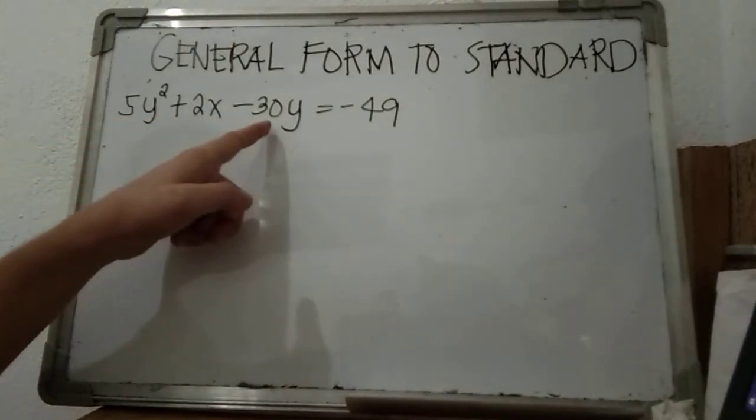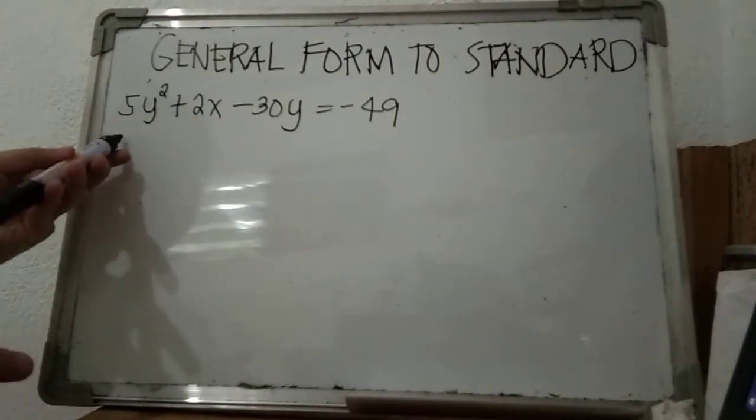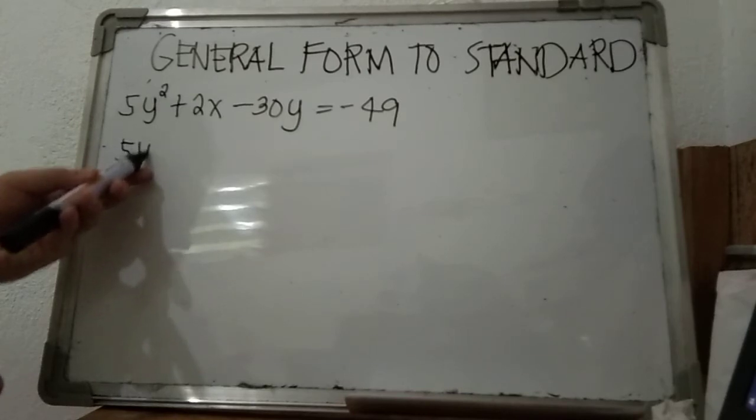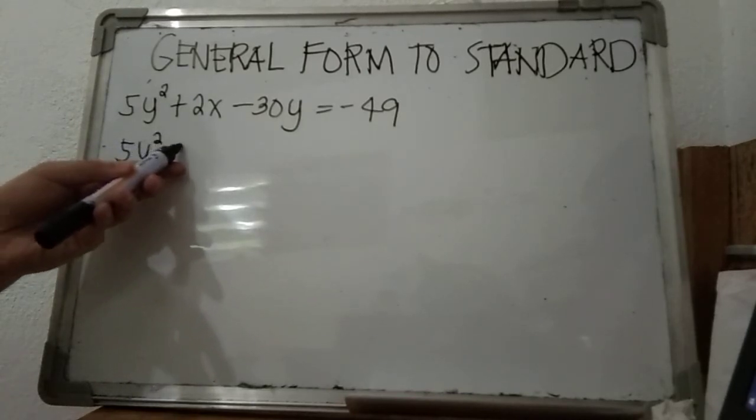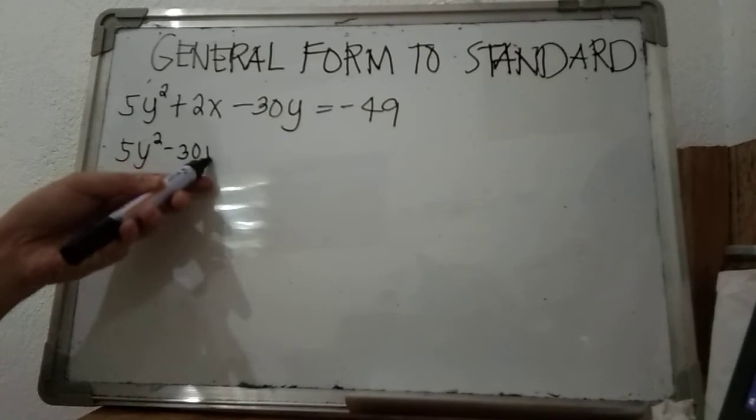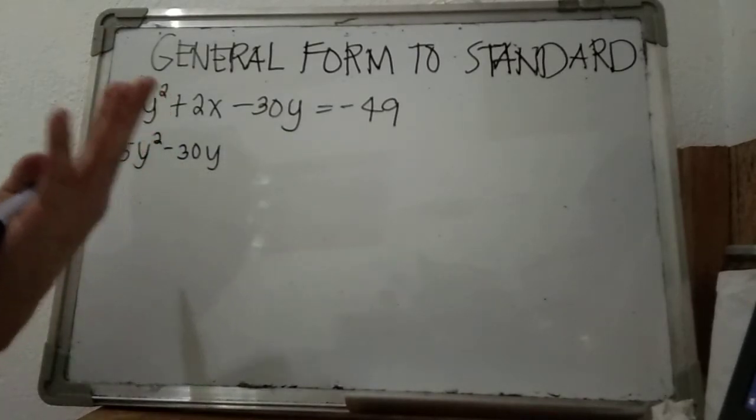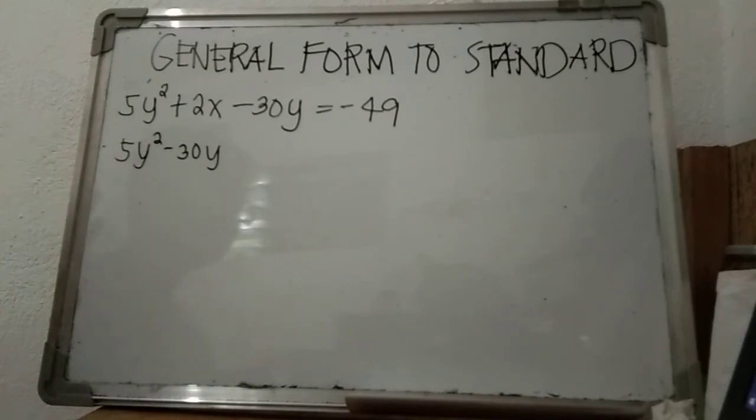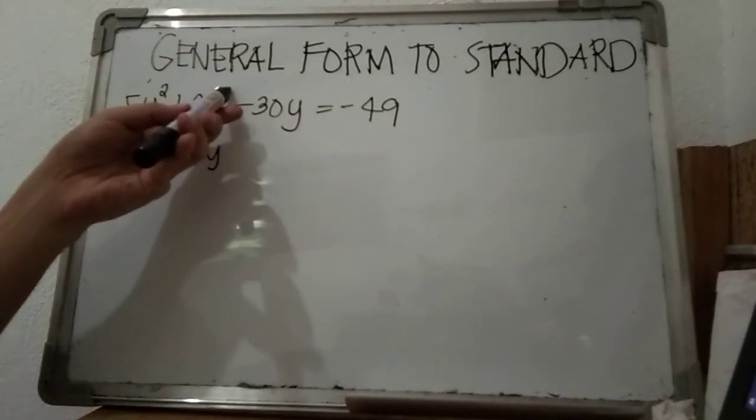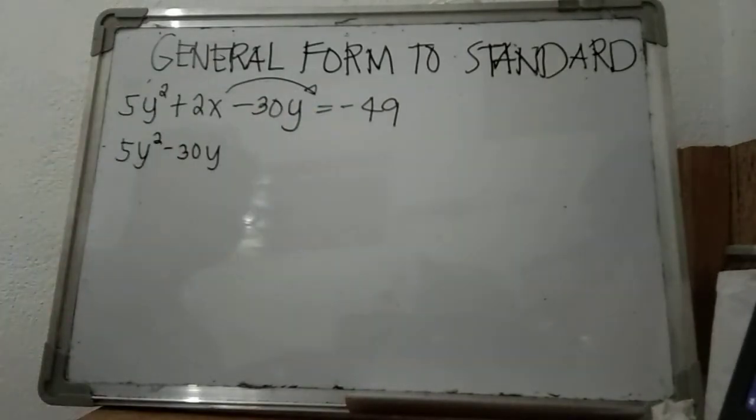So 5y² minus 30y. The variable that bears an exponent of 2 must be dominating or occupying the left side of the equation, which means that 2x will be transposed to the right.